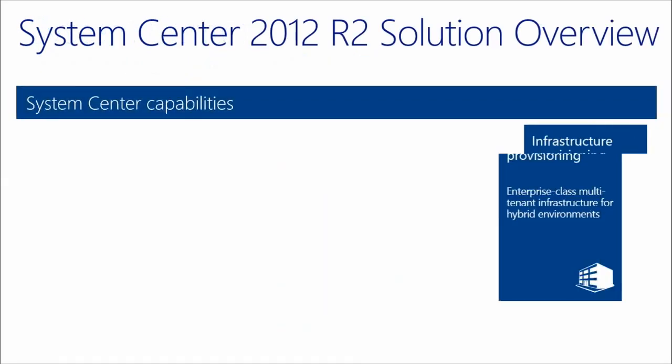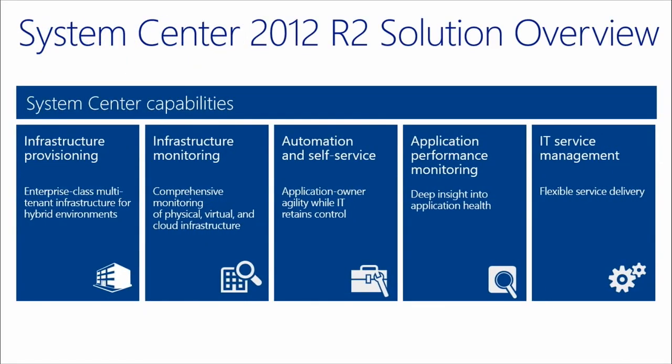As we put all these pieces together with System Center 2012 R2, we break it down across five different categories: provisioning the infrastructure, monitoring that infrastructure, providing automation and self-service to free up your time, better enabling our end users, constantly monitoring the health of VMs and applications running within them, and providing standard IT service delivery through traditional models like the ITIL library — the IT Infrastructure Library.